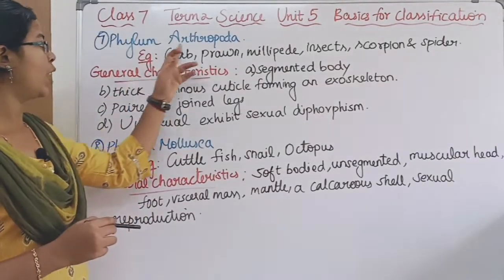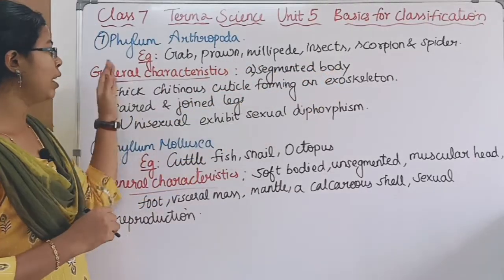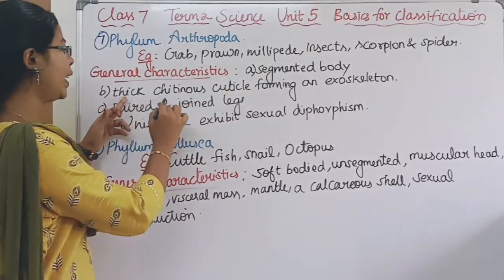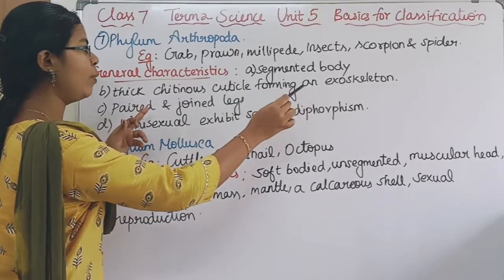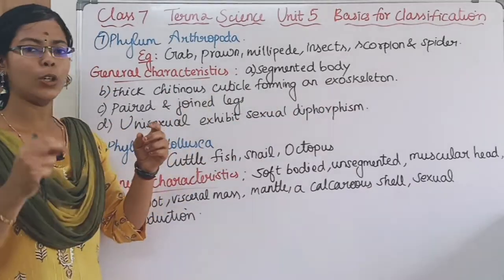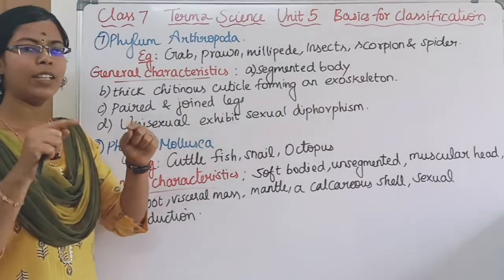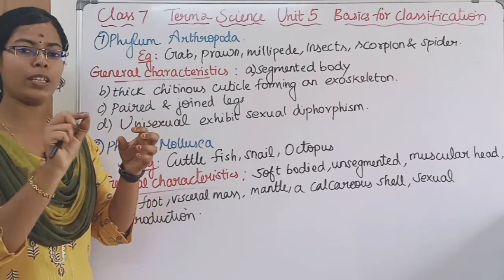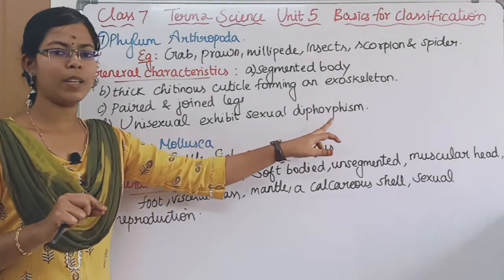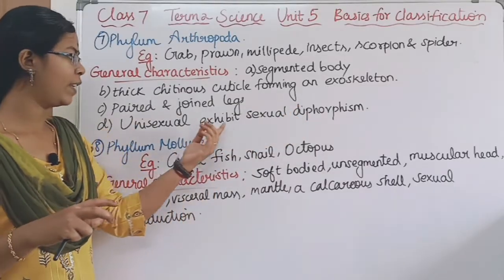The seventh phylum division is Arthropoda. Examples include crab, insects, scorpion, and spider. General characteristics: the body is segmented. There is a thick chitinous cuticle forming an exoskeleton — for example, the hard outer layer seen in a crab. They have paired and jointed legs. They are unisexual and exhibit sexual dimorphism — that is, differences between male and female of the same species are called sexual dimorphism.